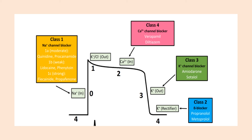There are five phases in the action potential curve: zero, one, two, three, four. Class one acts on the depolarization phase, class four on the plateau phase, class three acts on the repolarization phase, and class two acts on the resting membrane potential area.